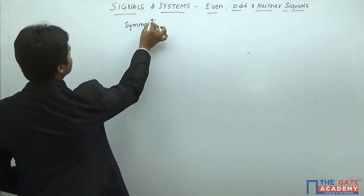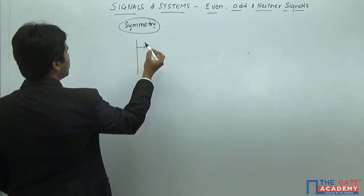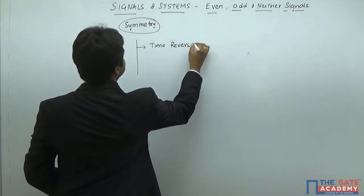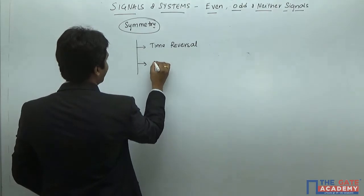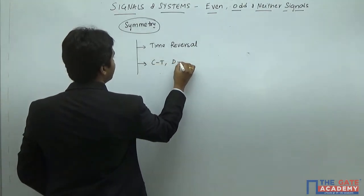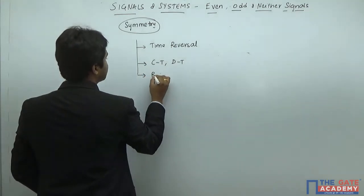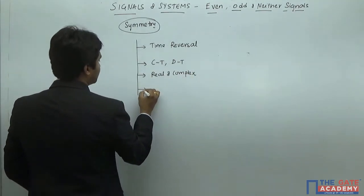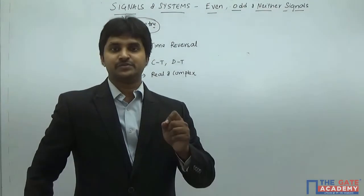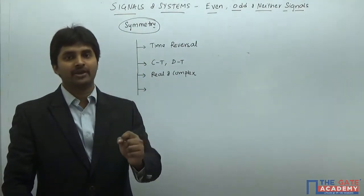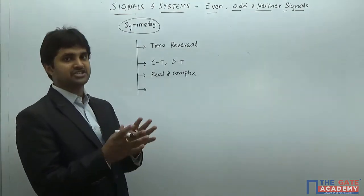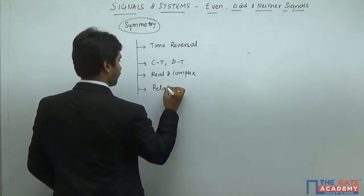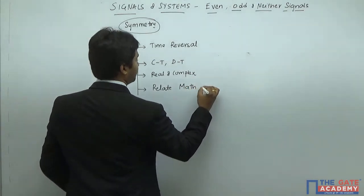To understand the concept of symmetry, we require some basic knowledge. First, we should know about the concept of time reversal. Second, we should know what is the meaning of a continuous time signal, discrete time signal, and also real signal and complex signal. We will also try to relate a concept in engineering mathematics which is what we call as transpose — an operation applied on a matrix — and see the relation between a symmetric matrix and a symmetric signal.